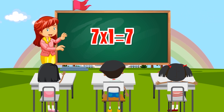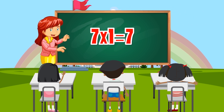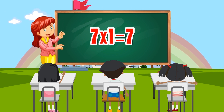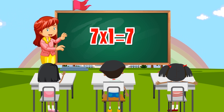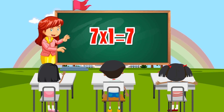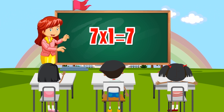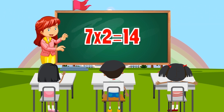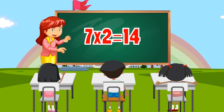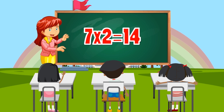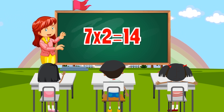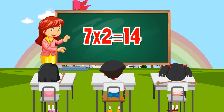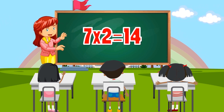7 times 1 equals 7. 7 times 2 equals 14.